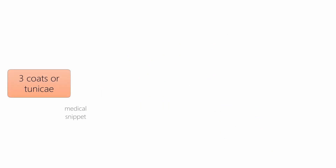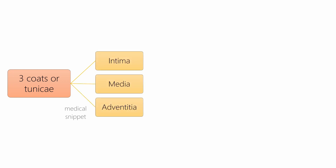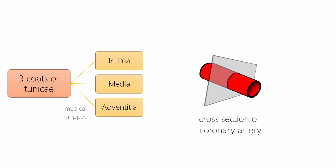These components are arranged into three concentric coats or tunicae, namely tunica intima, tunica media, and tunica adventitia. Let's draw them to understand in a better way. Let's take a cross-section of the coronary artery and study.